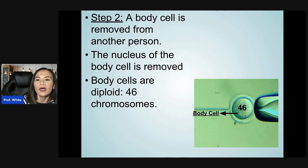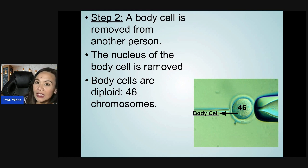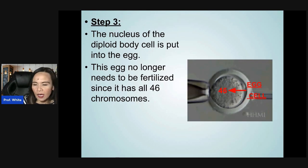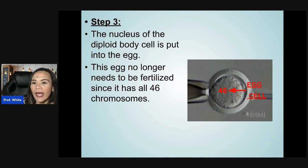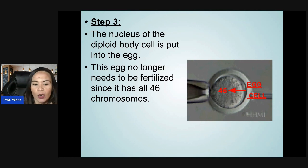In step two, a body cell is removed from another person, and the nucleus of the body cell is removed — body cells have 46 chromosomes. In step three, the nucleus of the diploid body cell is placed into the egg, which no longer needs to be fertilized since it now has 46 chromosomes.